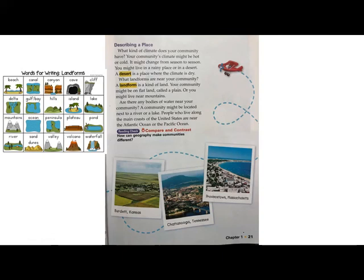What do we have around us? Well, Qatar is a peninsula, so we have a coastline, an inland sea, desert, and sand dunes. A landform is a kind of land. Your community might be on flat land called a plain, or you might live near a mountain. Some examples of landforms include: beach, canal, canyon, cave, cliff, delta, gulf or bay.